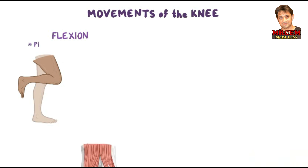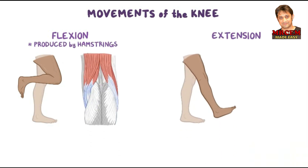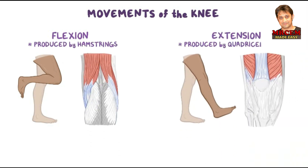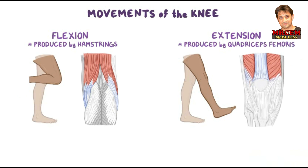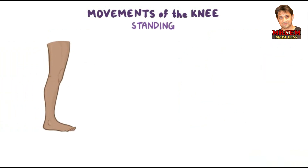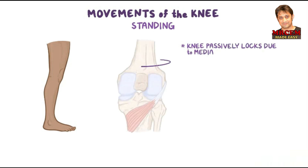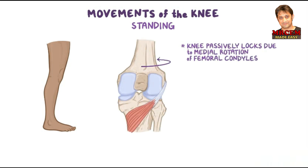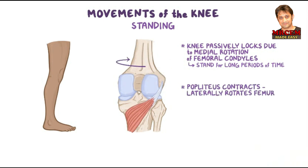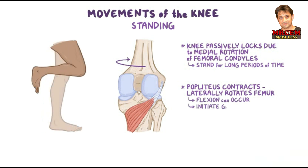The two main movements of the knee joint are flexion, primarily produced by the hamstrings, and extension, primarily produced by the quadriceps femoris. When standing with feet fixed on the ground, the knee passively locks due to medial rotation of the femoral condyles as they rest on the tibial plateau, allowing us to stand for long periods without fatiguing the quadriceps. When the popliteus muscle contracts, it laterally rotates the femur, helping unlock the knee so flexion can occur — crucial for initiating gait.